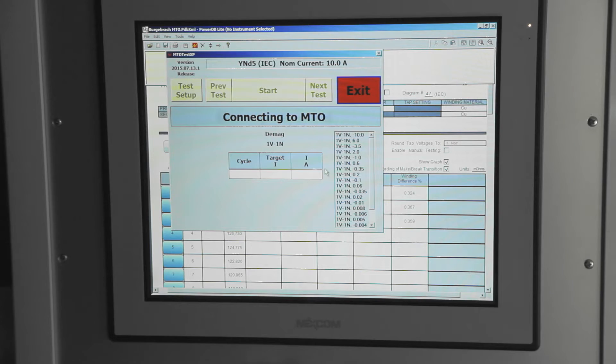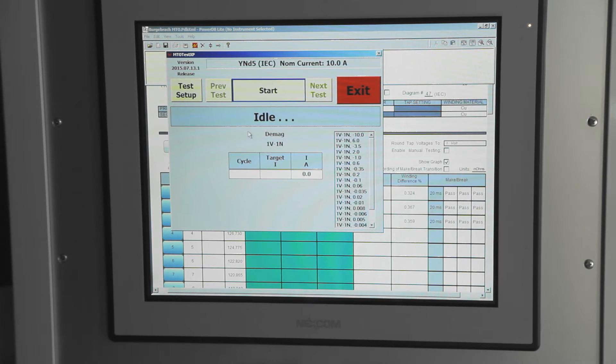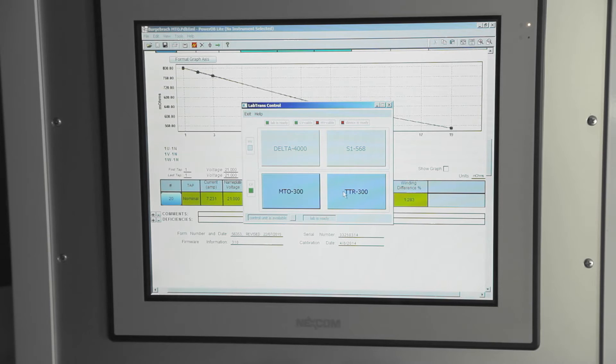Certain tests are sensitive to core magnetization, so demagnetization should be performed after measuring the winding resistance and before returning it to service.